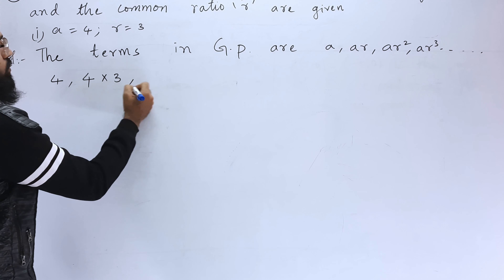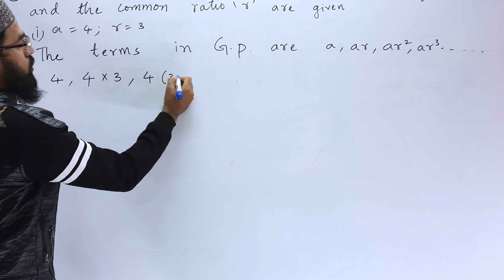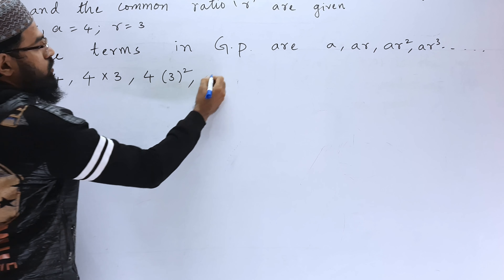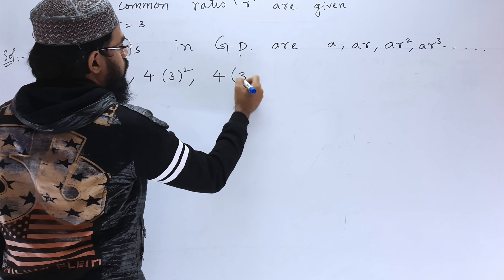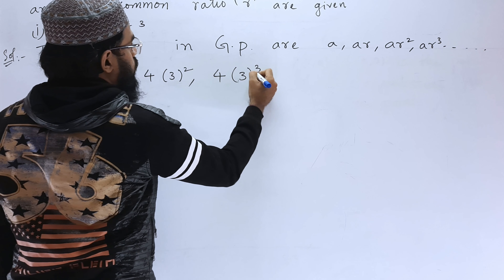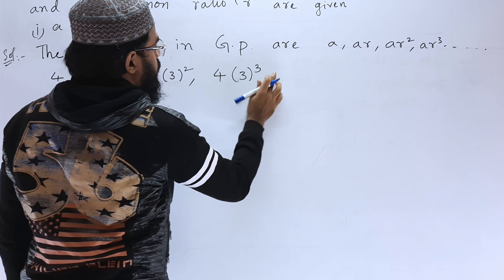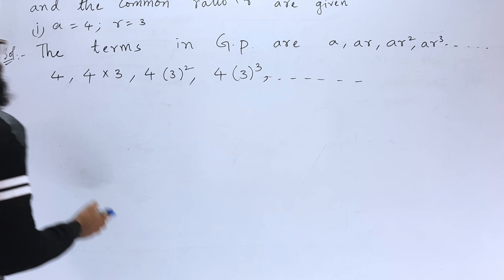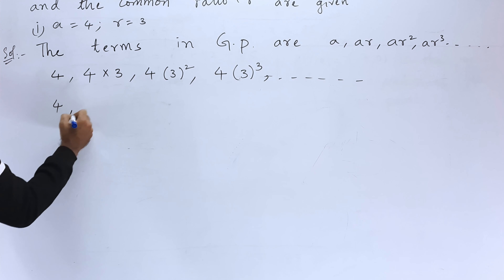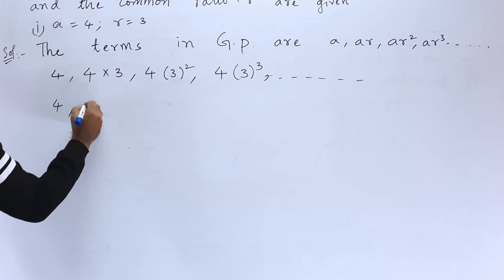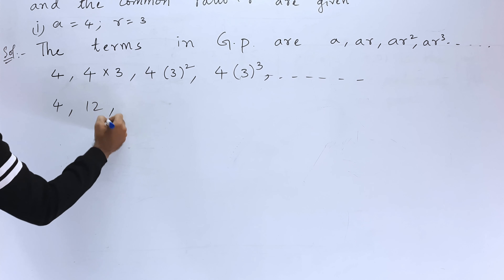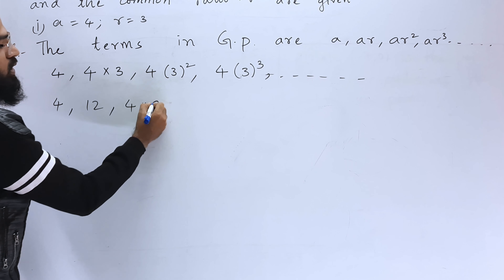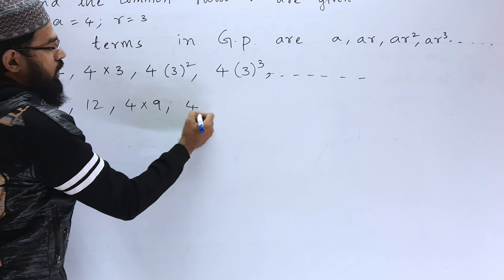Let us write the first three terms. The first term is A, which is 4. The second term is A into R, which is 4 into 3. The third term is 4 into 3 squared, and then 4 into 3 cubed, and so on.